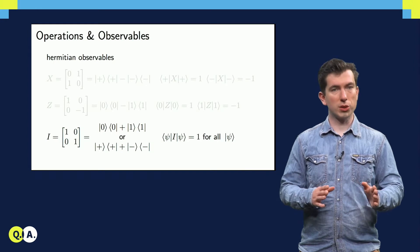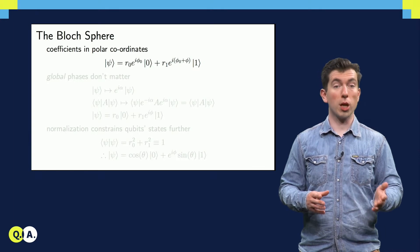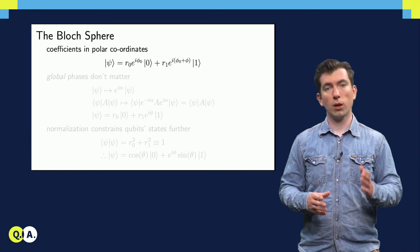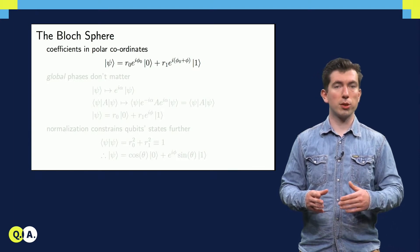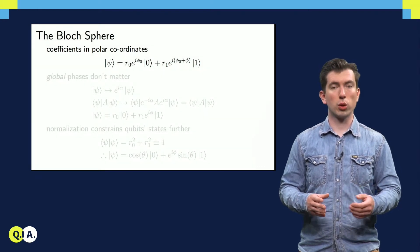Now that we have a few examples done, I'd like to focus a little on a useful geometric representation of qubit states, called the Bloch sphere. To show how qubit states can be mapped to the surface of a sphere, let's start by expressing the coefficients alpha and beta in polar coordinates.